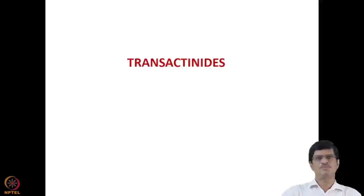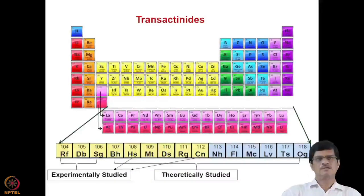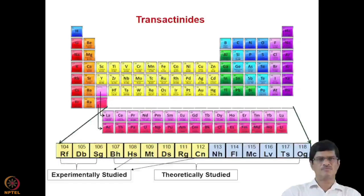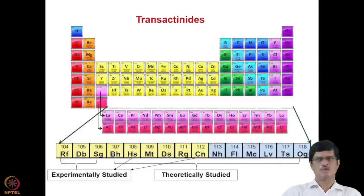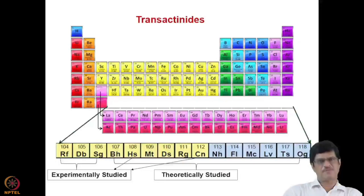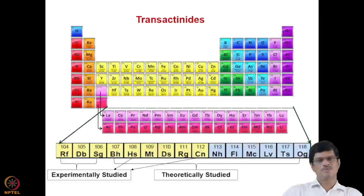We have completed the portion of actinides; now we will be discussing the transactinides and their chemical properties. Transactinides are part of the fourth transition series and start from element number 104, Rutherfordium, going up to element number 118. Some of the first few transactinides have been experimentally studied, while the later ones are theoretically studied. They have been determined by physical methods by counting in physics experiments, but chemistry experiments are not possible because of the very short half-lives of some of the later transactinides.